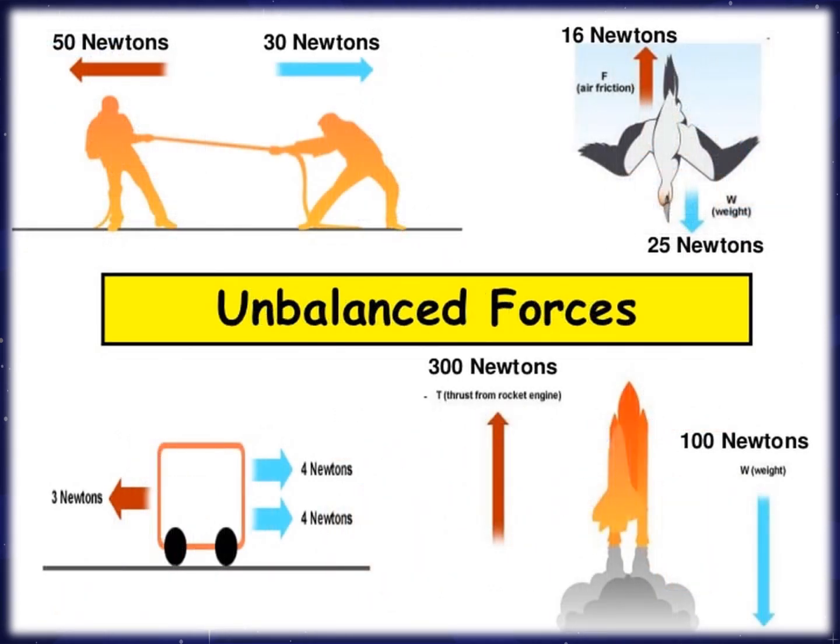Next, you also have unbalanced force. Practically, anything that moves is a result of the exertion of unbalanced forces. If you kick a football and it moves from one place to another, it means that unbalanced forces are acting upon it. Look at the example: we have Force 1 at 50 newtons and Force 2 at 30 newtons. Where do you think the direction will go? It will go to the left — so it is unbalanced force.